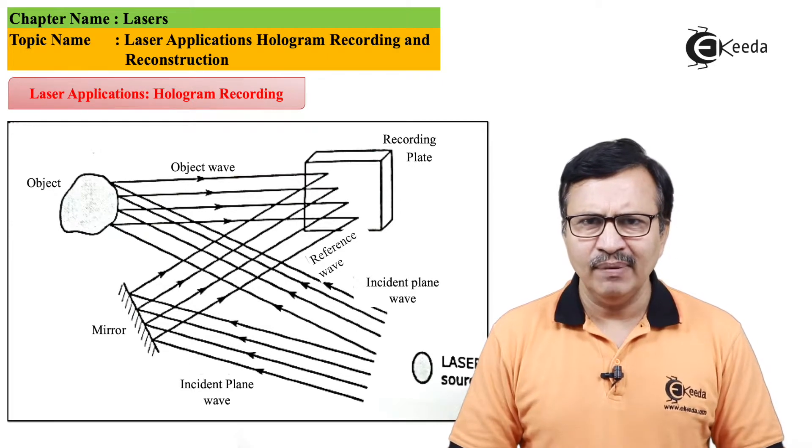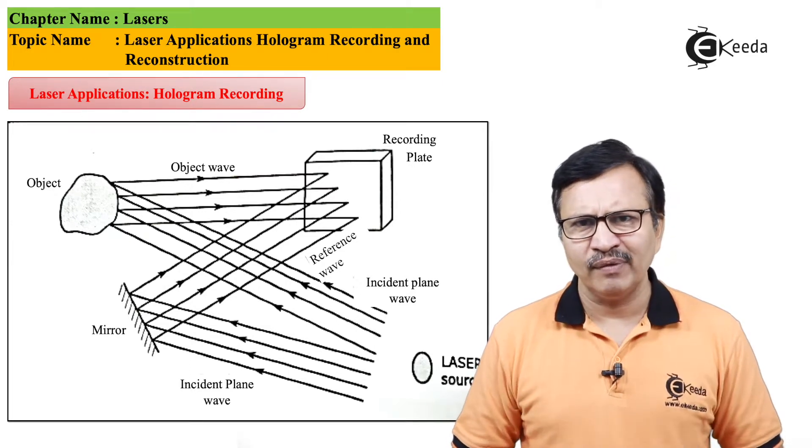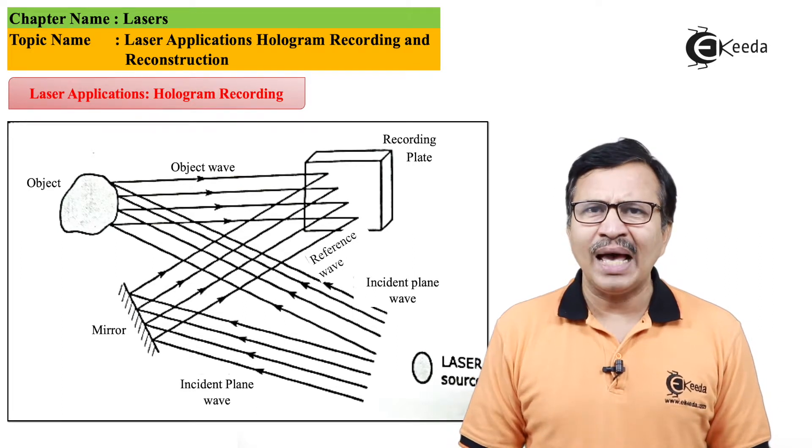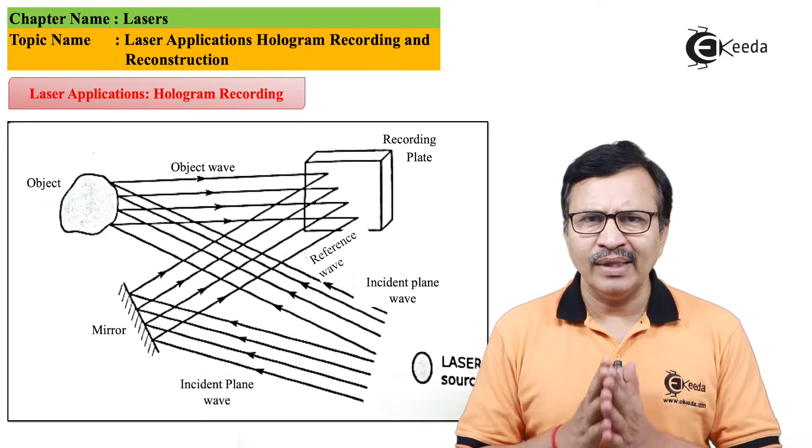So when we are having these two waves, one is the object wave and the second is the reference wave, both these waves will interfere.